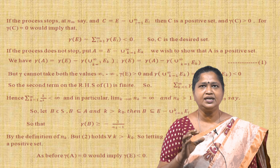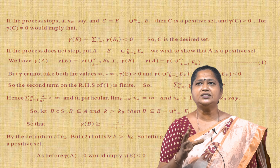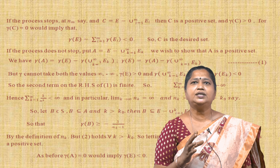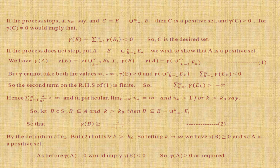If the process stops at step m, then c = E \ ∪_{i=1}^{m} E_i is a positive set and ν(c) > 0, since ν(c) = 0 would imply ν(E) = Σ_{i=1}^{m} ν(E_i) < 0. So c is the desired set. If the process does not stop, we continue and set A = E \ ∪_{k=1}^{∞} E_k. We need to show that A is a positive set.